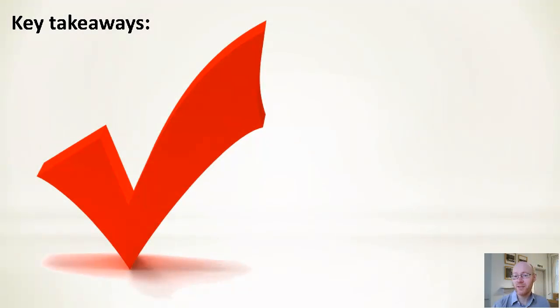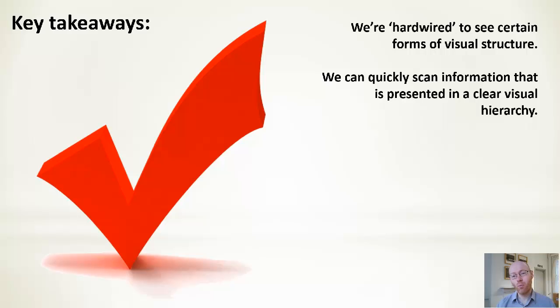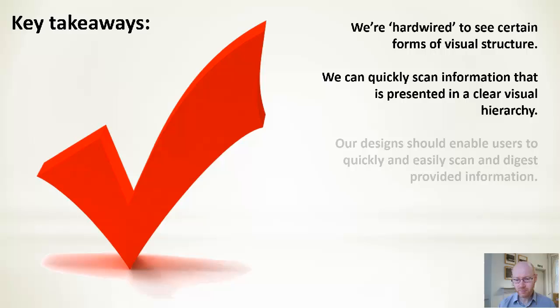So summary on this: we were effectively hardwired to see certain forms of visual structure. We will do and see the structure effortlessly. We quite often want to scan information. We're interested in one particular thing, we're not interested in other things. So the ability to scan information to quickly find it is something that's going to make us happy users as opposed to having to trudge through a lot of stuff that we're not that interested in.